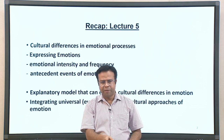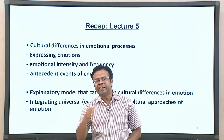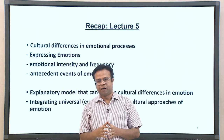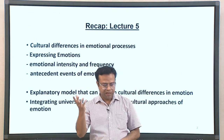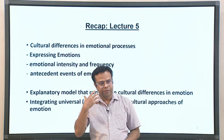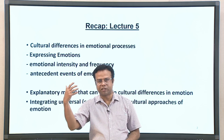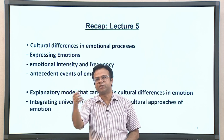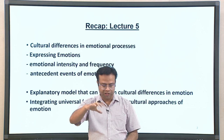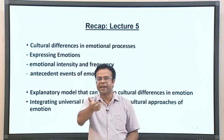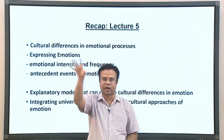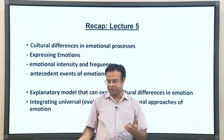At the end of lecture 5 we discussed Ekman's neuro-cultural theory as an integrative model explaining both universal similarities and cultural differences. It basically says there are universal aspects to basic emotions experienced in every culture; however, display rules of culture can sometimes suppress or override those expressions because of cultural norms and practice, which is why we see varied cultural differences.